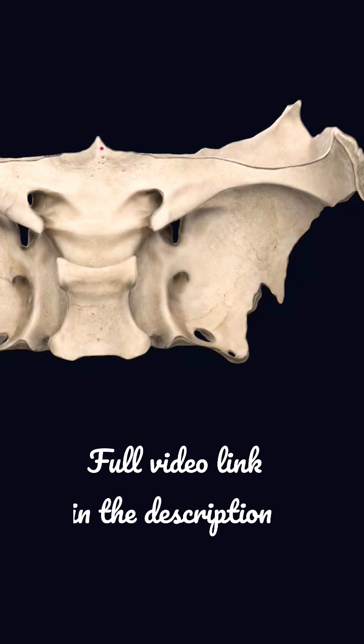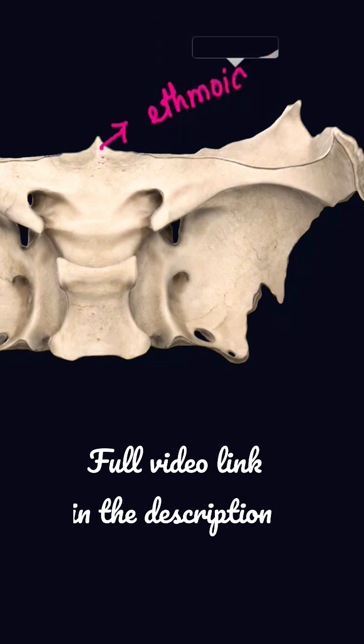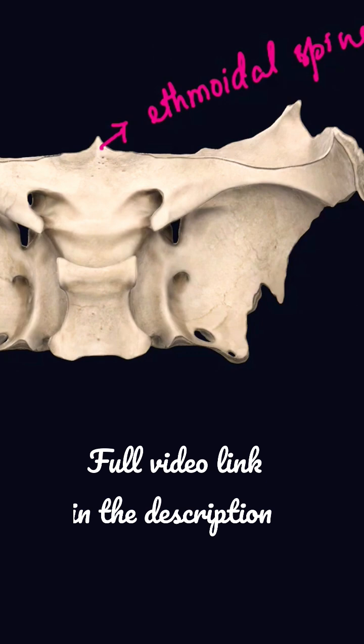It presents first the ethmoidal spine. This ethmoidal spine is a triangular projection which is present between the two lesser wings, and it articulates with the posterior margin of the crown.